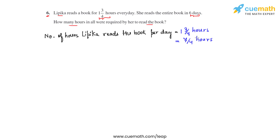Now we have to see how many days she reads this book. She has read the book for 6 days, and every day she is spending 7/4 hours. So we write the number of days to be equal to 6 days.